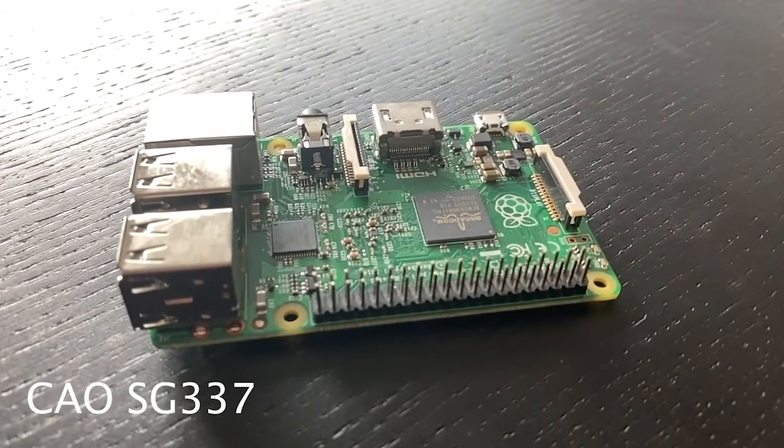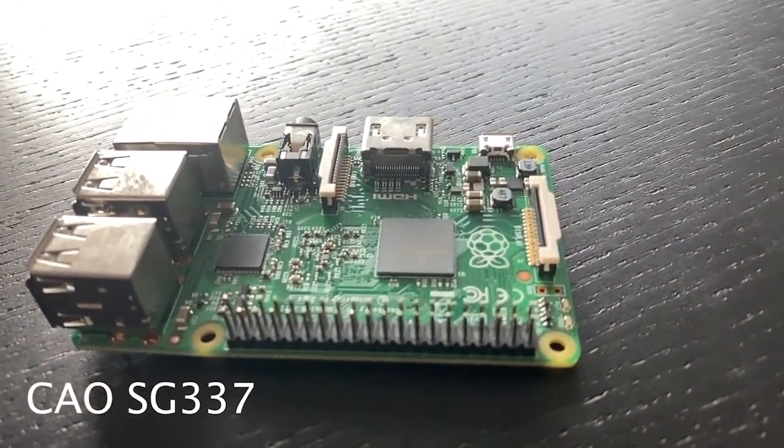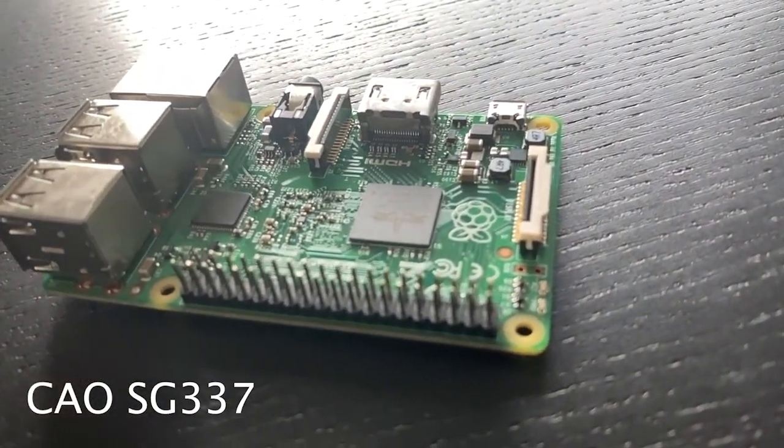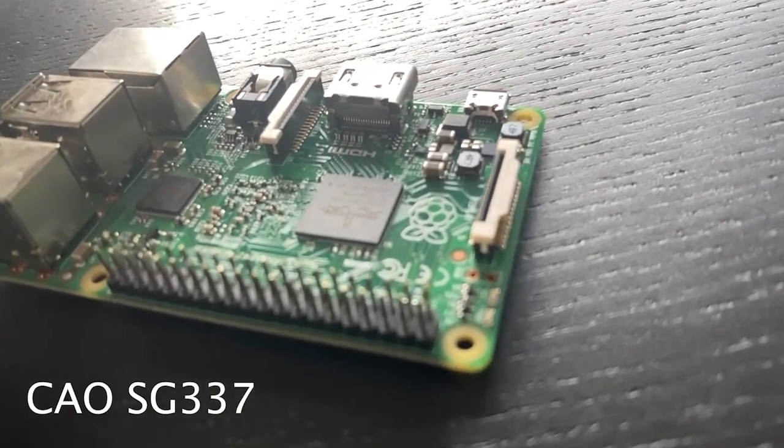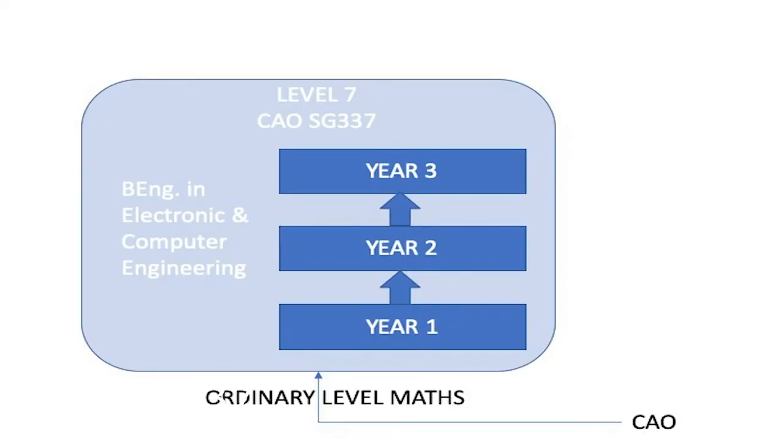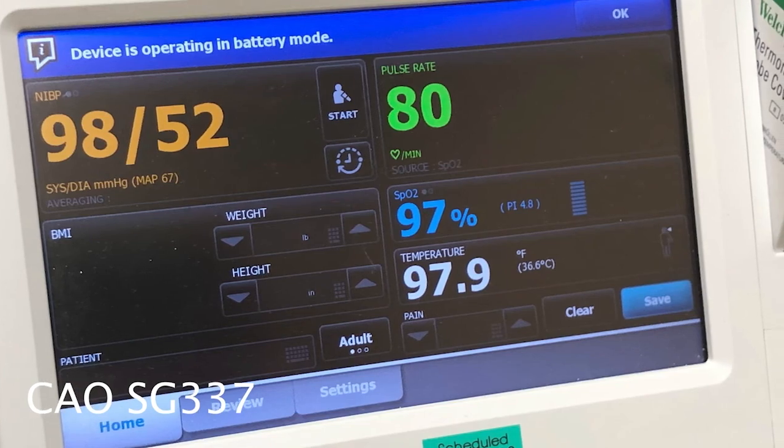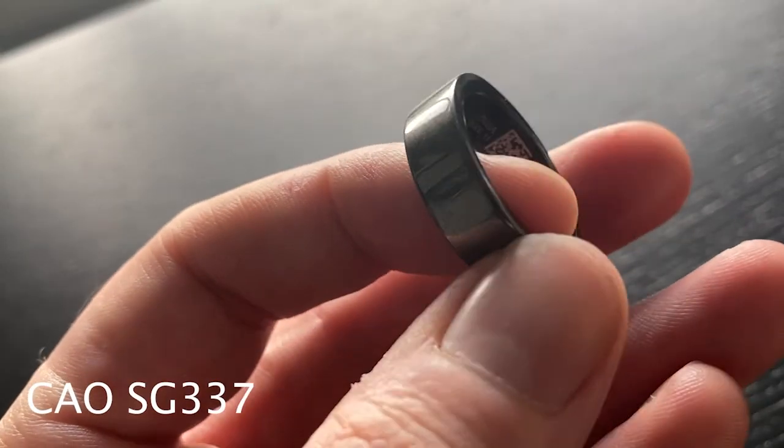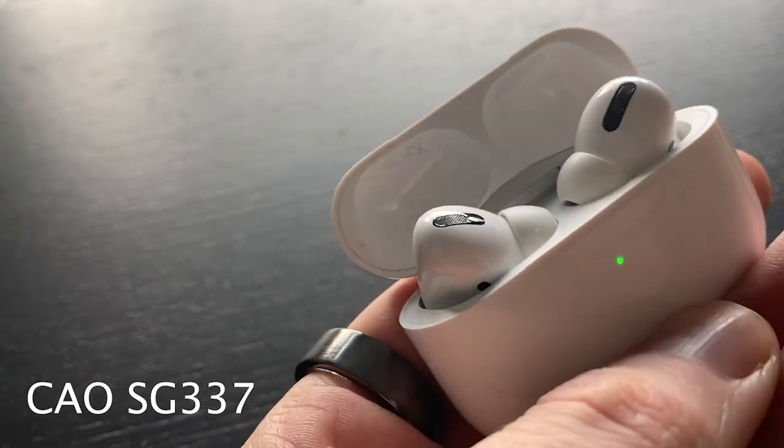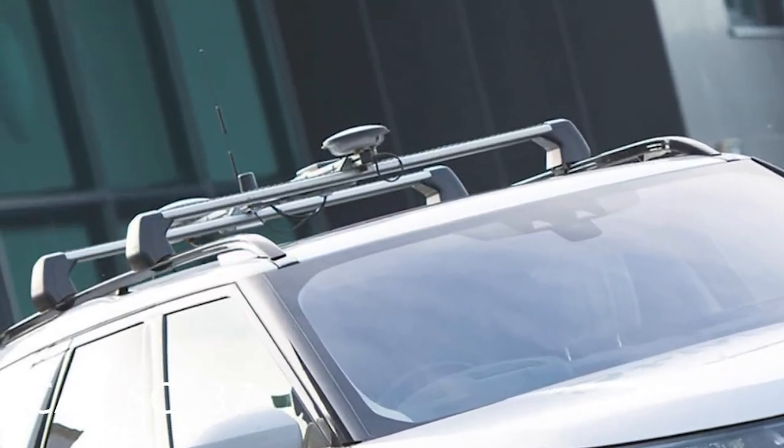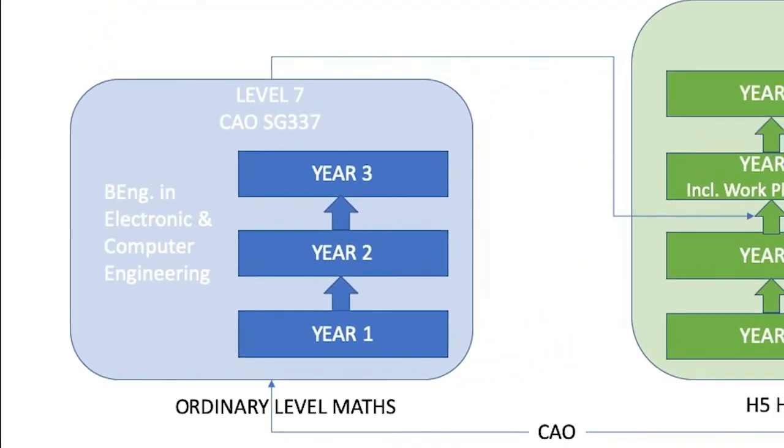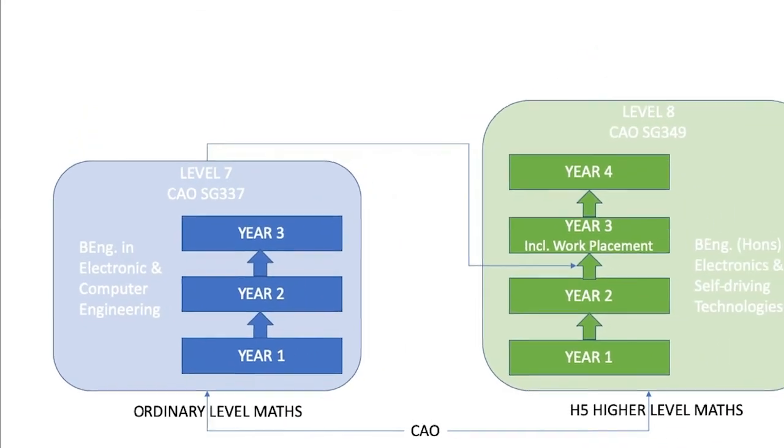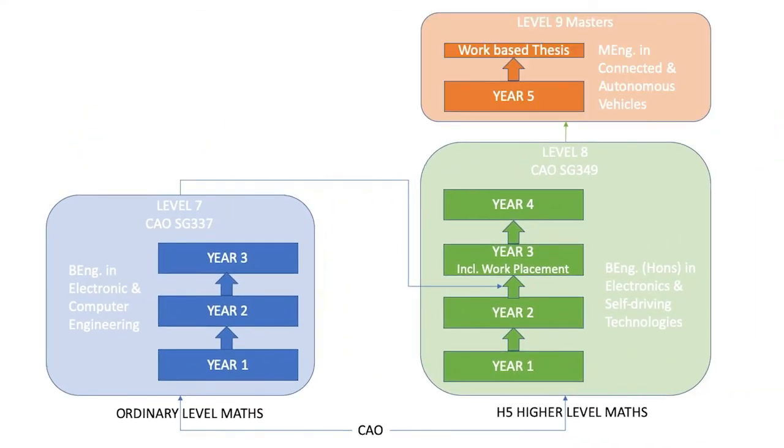If you are interested in technology or engineering but are not doing higher level maths, why not consider our level seven in electronic and computer engineering? This is a three year program that looks at the design and development of embedded electronic systems. These are the medical devices that keeps us healthy, the consumer devices that keeps us entertained, or the controlled systems that keeps us safe on the road. You can then progress on to the level eight in electronics and self-driving technologies and from there to the masters. Check out the link below for more information.